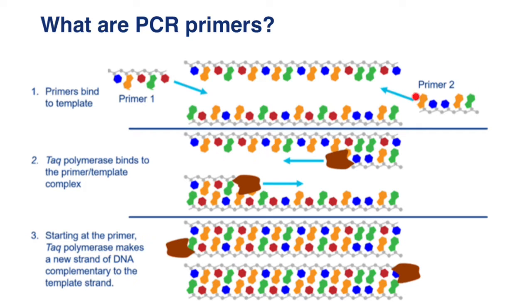Primers can be of two kinds — they can be RNA-based or DNA-based. In the laboratory, we usually use DNA-based primers because they cost about 10 times cheaper than RNA-based primers.